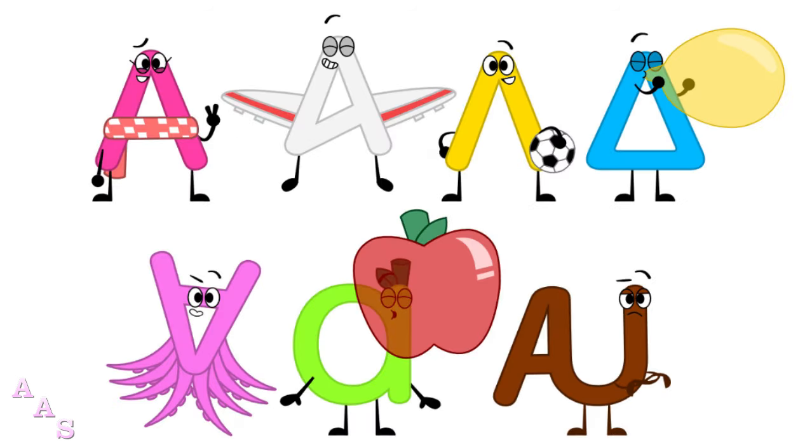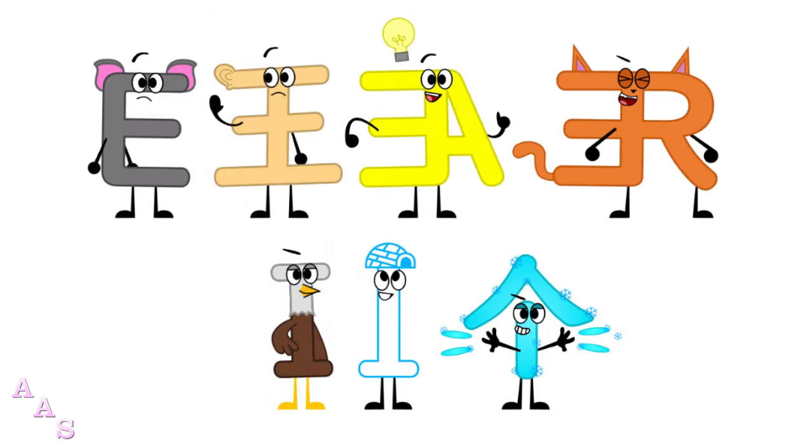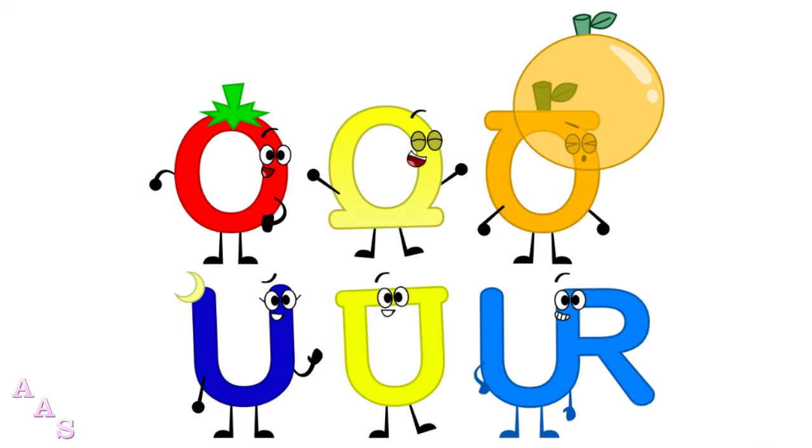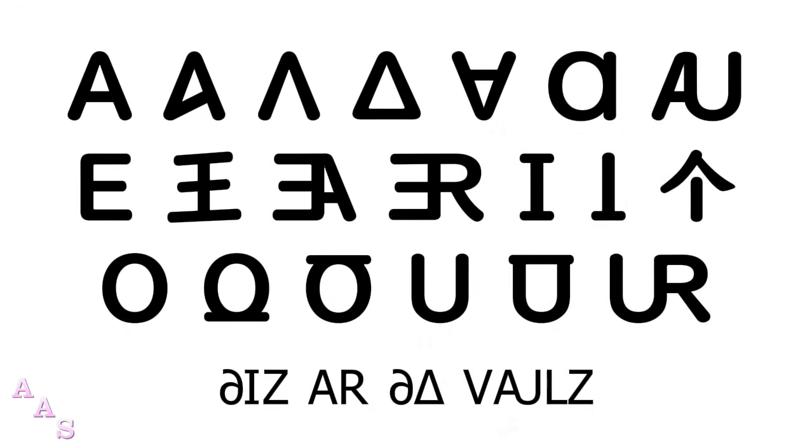One, two, three. O, A, O, U, A, O, U, R, E, I, O, O, U, U, U, U. These are the vowels.